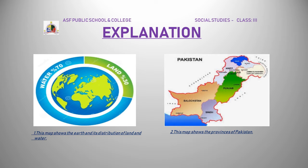Explanation. This map shows the earth and its distribution of land and water. Zameen ka nakshah hume iske paani aur zameeni hisse ki nishandahi karta hai. Is nakshah mein blue color paani ko aur green color zameen ko show kar raha hai. In this map, blue color shows water and green shows land.